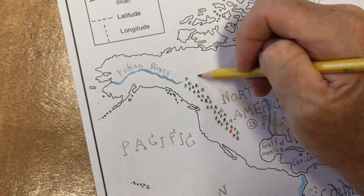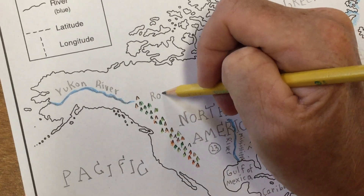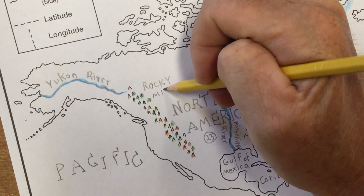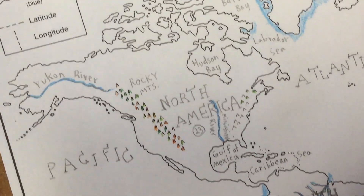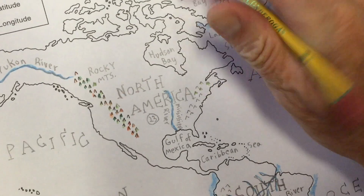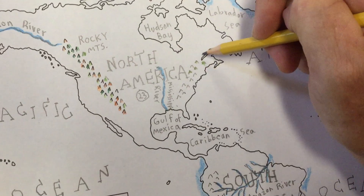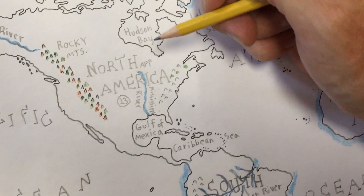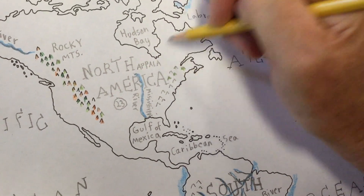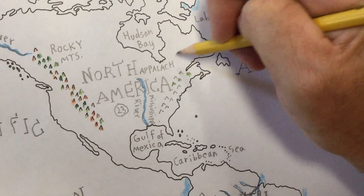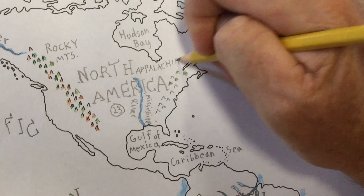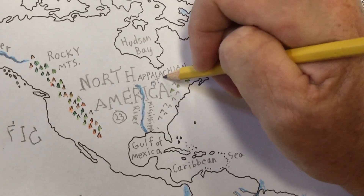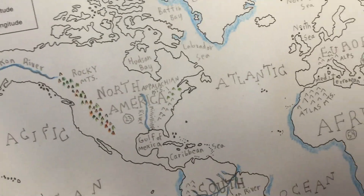For the Rocky Mountains, I can fit the label right where there's a nice open space. For the Appalachians, it's quite busy in here — I'll try to fit it right across. I'll write 'Appalachian MTS' and put a little line pointing to them.